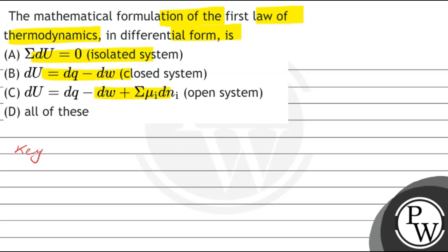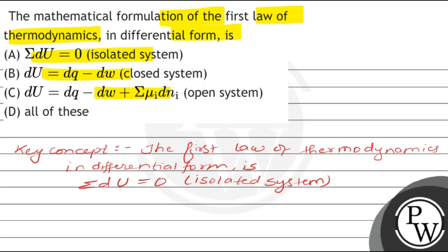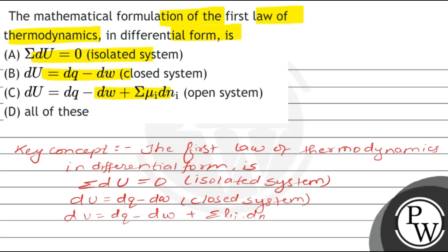Please note that the key concept of this question is the first law of thermodynamics in differential form. Summation over dU is equal to zero for an isolated system. This means change in internal energy is equal to heat supplied minus work done by the system, and dU equal to dQ minus dW plus summation over mu_y dN_i for an open system.